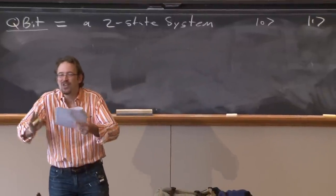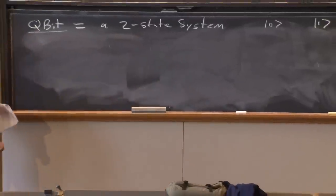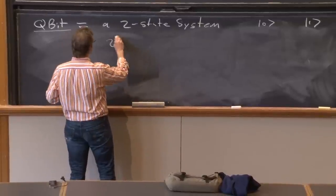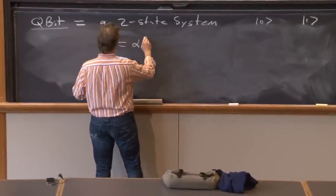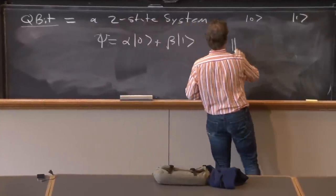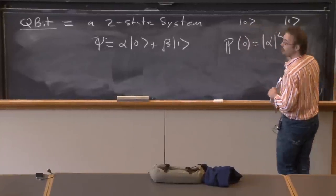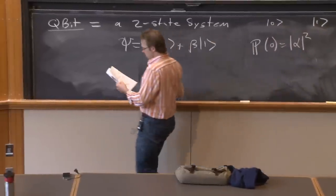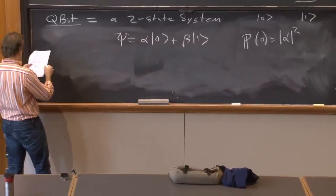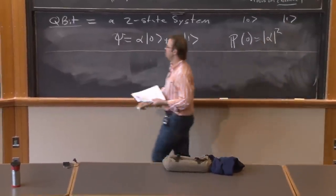A general wave function is ψ = α|0⟩ + β|1⟩, and the probability that I measure 0 is |α|². Many systems can be used as substrates. That's one qubit. The much more interesting system is two qubits.